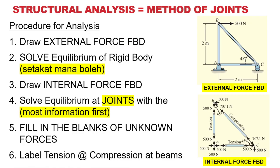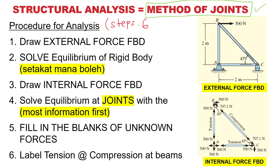Now we're going to learn something called the Method of Joints. In this course you will be learning one method — there are two methods actually: method of joints and method of sections. You can use either one, but I feel the method of joints is somewhat more simple and easier to use in any analysis. Typically there are six steps.